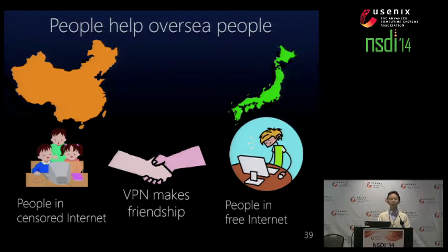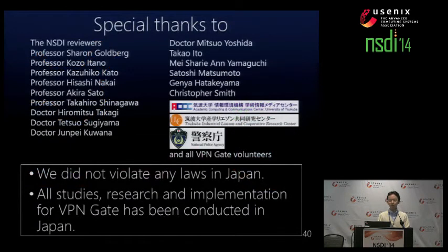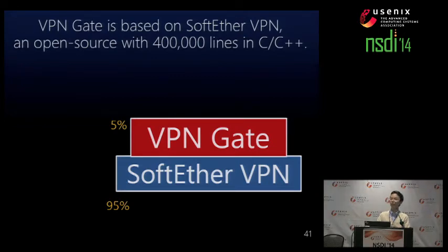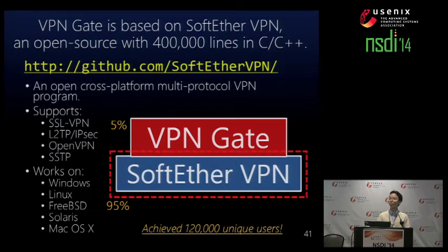That will certainly promote friendship between Chinese people and other censored countries' people with their neighbor countries' people. We did not violate any laws in Japan. We conducted all research and implementation for VPN Gate only in Japan. Finally, VPN Gate is based on SoftEther VPN, another project which is an open source VPN software with 400,000 lines of C code. VPN Gate is just 5% of the codebase, while 95% is SoftEther VPN. These programs are available on GitHub. Please download the source code if you are interested. Thank you.